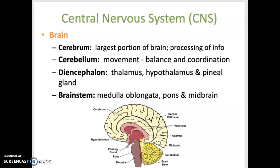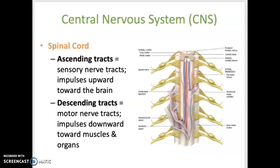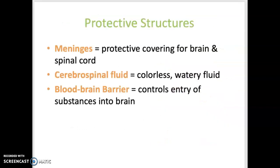The spinal cord is responsible for transmitting information between the brain and the rest of the body. There are protective structures surrounding both the brain and spinal cord. The meninges are three connective tissue coverings that surround and protect the brain and spinal cord.